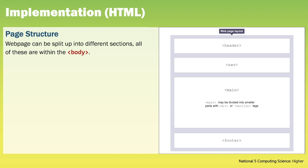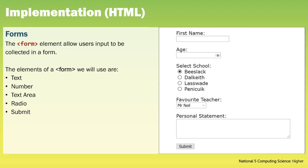Much of the HTML that we will implement at Higher is similar to that of National 5. However at Higher we're expected to be able to implement forms. The form element allows user input to be collected in a form. At Higher the elements that we will use are text, number, text area, radio and submit. On the screen here you can see an example of a simple form.